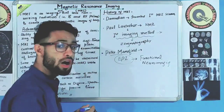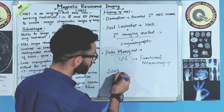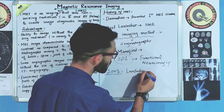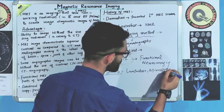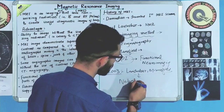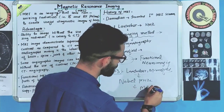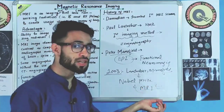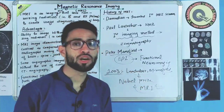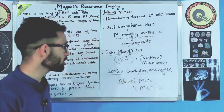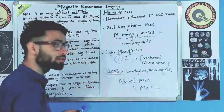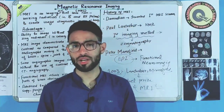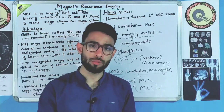In the year 2003, Paul Lauterbur and Peter Mansfield shared the Nobel Prize for their discoveries concerning MRI. They were awarded the Nobel Prize in Physiology and Medicine in 2003. I hope today's basic topic on MRI — its introduction and history — was well understood. If anyone has any doubts or queries, please write them in the comment section.